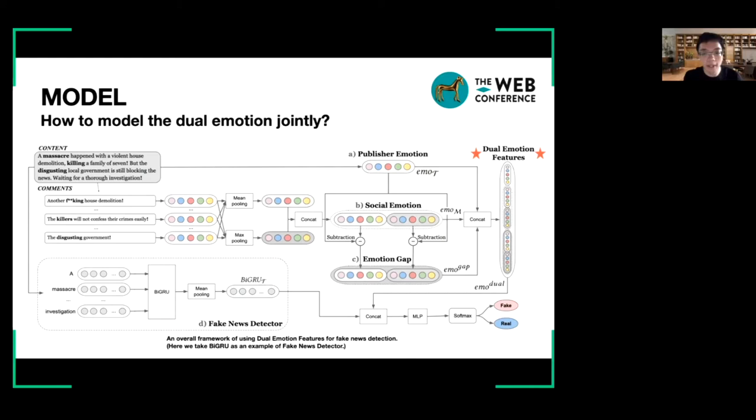Given a news piece, we firstly extract a few emotion features from its content, obtaining publisher emotion. The specific emotion features are introduced later on.